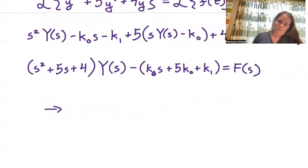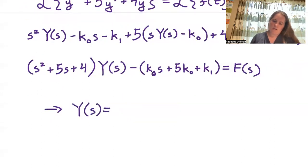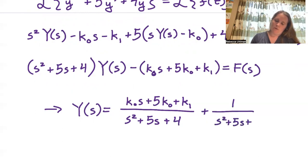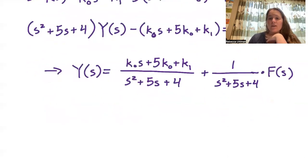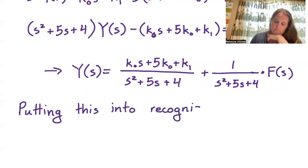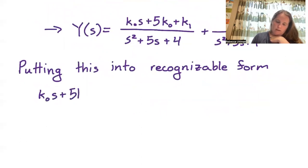Solving for Y(s), we get Y(s) = (k₀·s + 5k₀ + k₁)/(s² + 5s + 4) + F(s)/(s² + 5s + 4). From here we need to do some partial fractions. Putting the first term into recognizable form: (k₀·s + 5k₀ + k₁) over (s² + 5s + 4) equals (k₀·s + 5k₀ + k₁) over (s + 4)(s + 1).